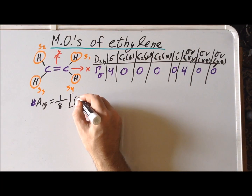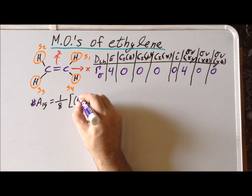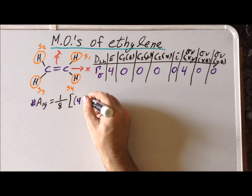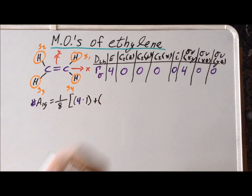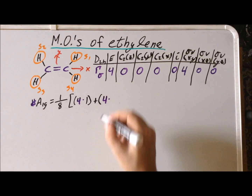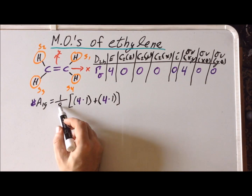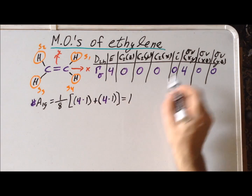So our first term: we have a four from the reducible representation, and the character from A1g is a positive one, so we have four times one. Then for sigma v xy, the character from the reducible representation is four and the character from A1g is also one. So four plus four is eight, eight divided by eight equals one — there is one A1g in the reducible representation.